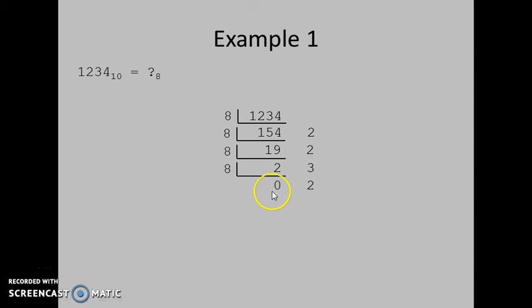We have got an answer equal to 0, therefore we will stop this process here. Finally, we will write down these remainder values in reverse order.